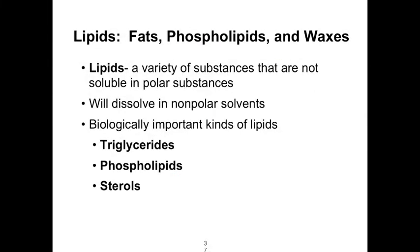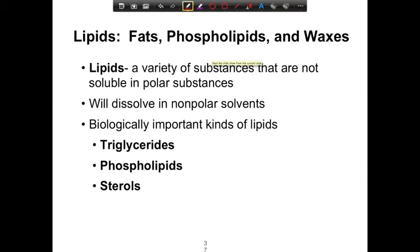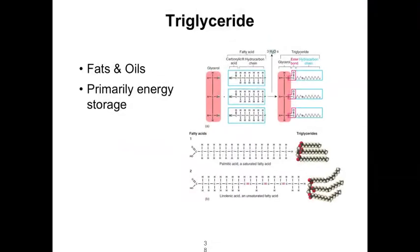Now let's review lipids. The lipid category is a non-polymer category — it's not composed of repeating subunits of the same monomer, but rather several different types. Lipids include fats, phospholipids, and waxes. They are not soluble in polar substances but will dissolve in non-polar solvents. The biologically important kinds we'll examine are the triglycerides, the phospholipids, and the sterols.